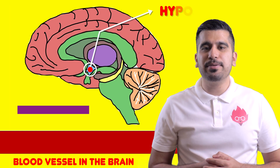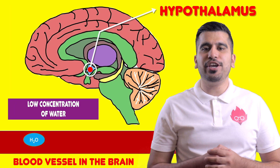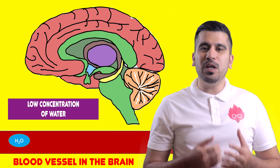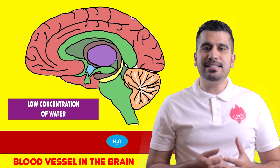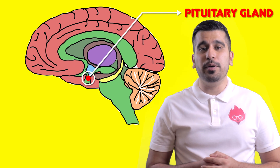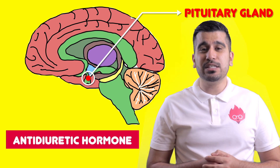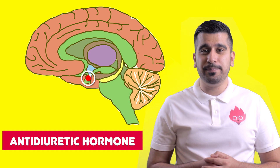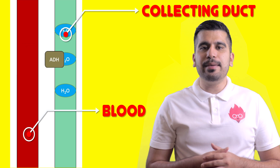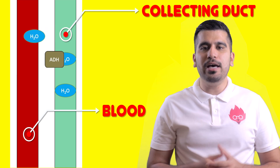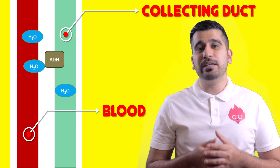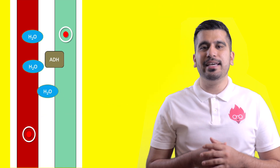Receptors in the hypothalamus are able to detect changes in water concentration in your blood. If water levels are low in the blood, they send signals to the pituitary gland to secrete a hormone called ADH, which stands for anti-diuretic hormone. ADH travels in the blood towards the collecting duct where it makes its walls more permeable to water.